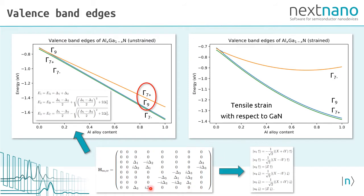So we start with a crystal field spin orbit Hamiltonian. When we diagonalize it, we obtain eigenvectors and eigenenergies. And these eigenenergies are shown as a function of alloy content. And one can see that there's a transition where the order of the three holes changes. The same figure is shown on the right, but this time the aluminum gallium nitride layer is strained with respect to the substrate. So the strain can change the energy levels dramatically.